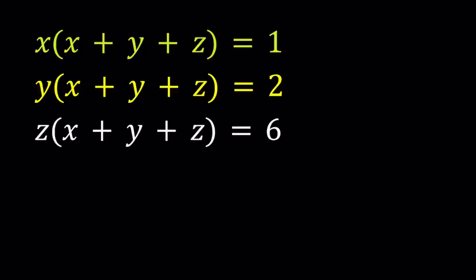Hello everyone. In this video, we're going to be solving a polynomial system. We have x times the quantity x plus y plus z equals 1, y times the quantity x plus y plus z equals 2, and z times the quantity x plus y plus z equals 6. And we're going to be solving for x, y, and z.